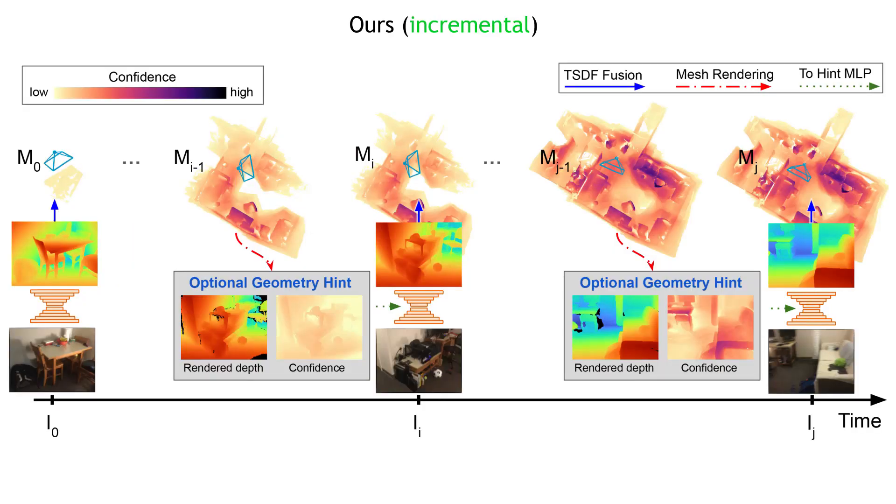This geometry hint and confidence map are optional, and are passed to the network on every new current frame if available.